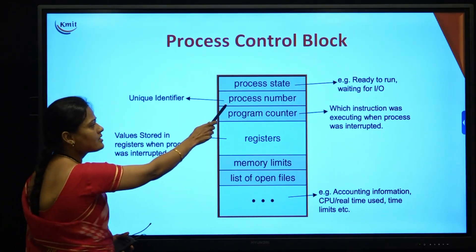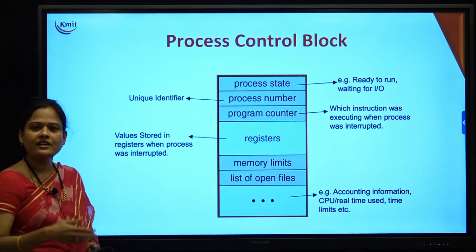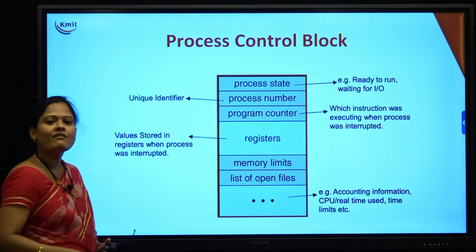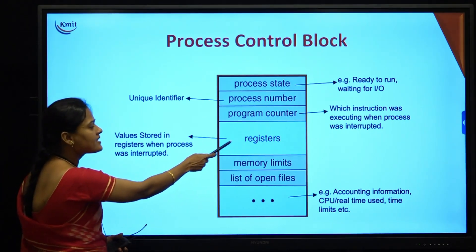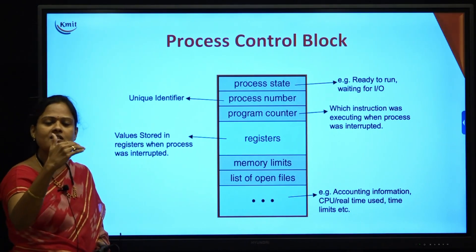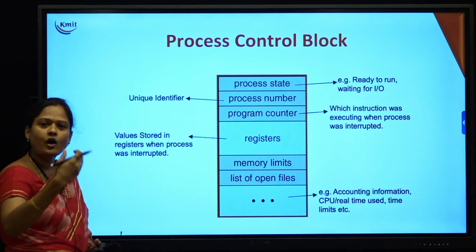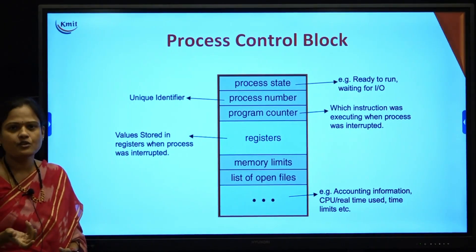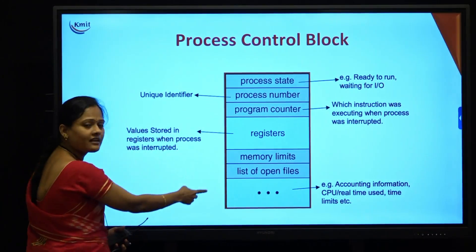The process ID starts from 0 to n minus 1. Next is the program counter, which contains the address of the next instruction to be executed. There is also a set of registers used by the process during execution for storing input or output data. Memory limits specify the starting and maximum range of memory needed for the process. The PCB also records what files are being accessed by the process, and can include accounting information such as the amount of CPU usage by that process. All of these together form the process control block.